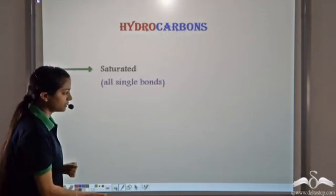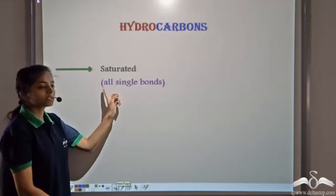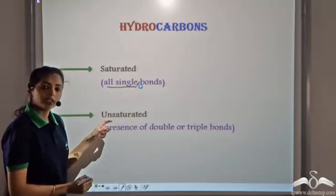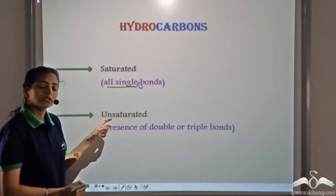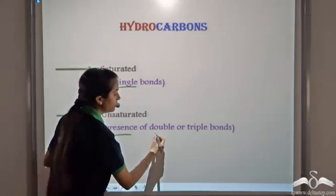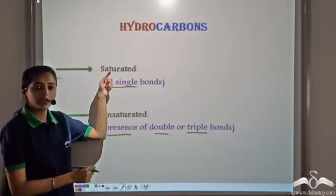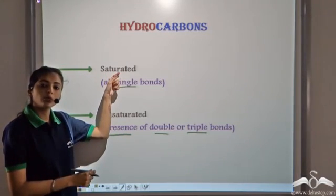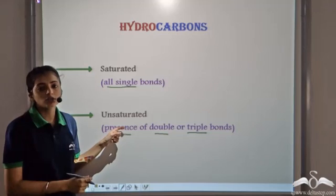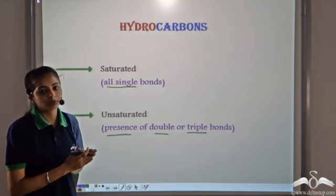Hydrocarbons are classified as saturated hydrocarbons — these are the compounds containing all single bonds — and the unsaturated hydrocarbons, which have a presence of a double or a triple bond.